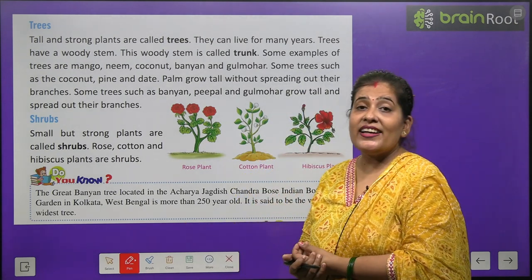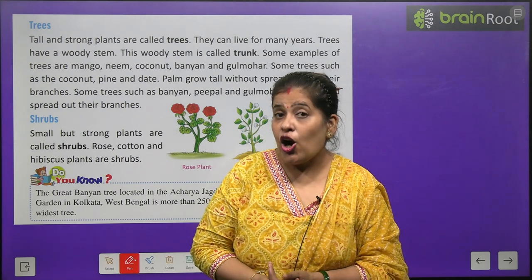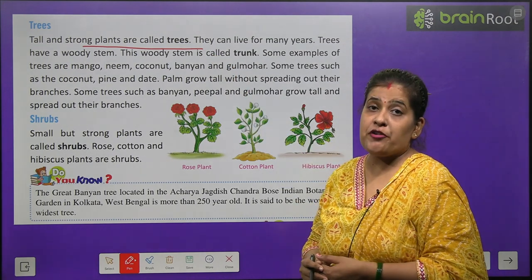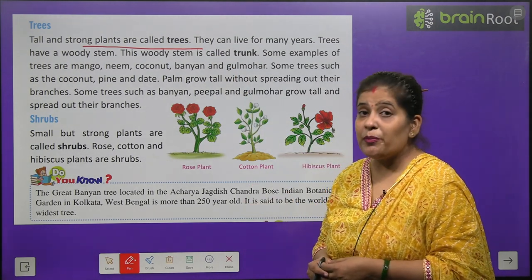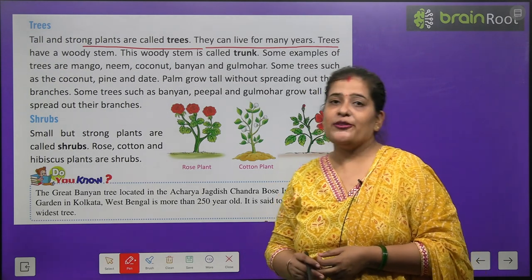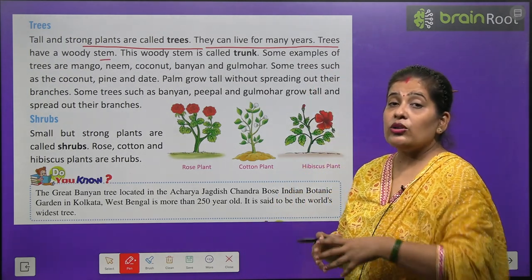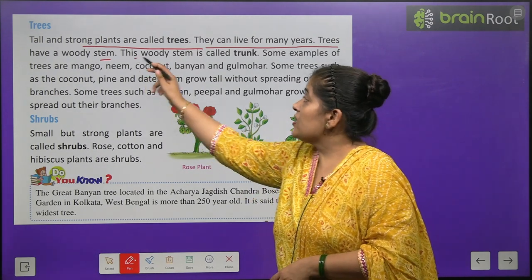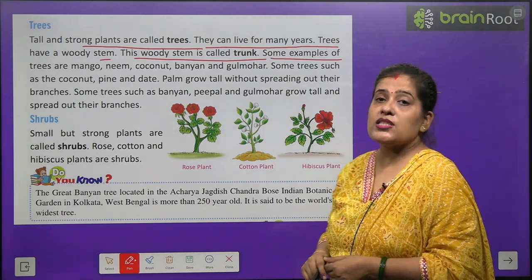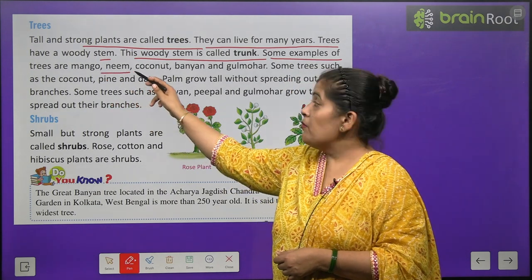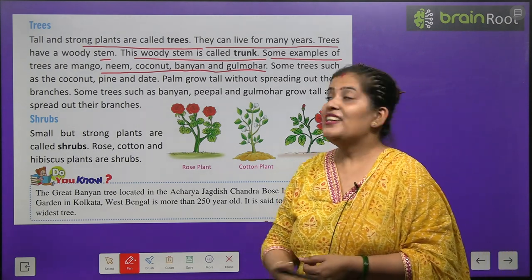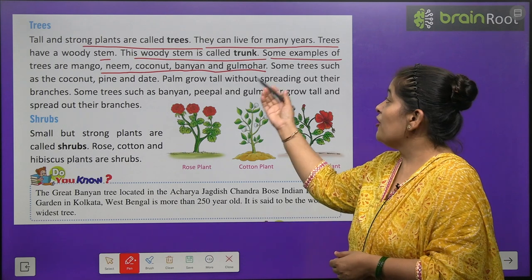Big and strong plants are called trees. They can live for many years. Trees have a trunk. Some examples of trees are mango, neem, coconut, banyan, and gulmohar. These trees are very big and very important.